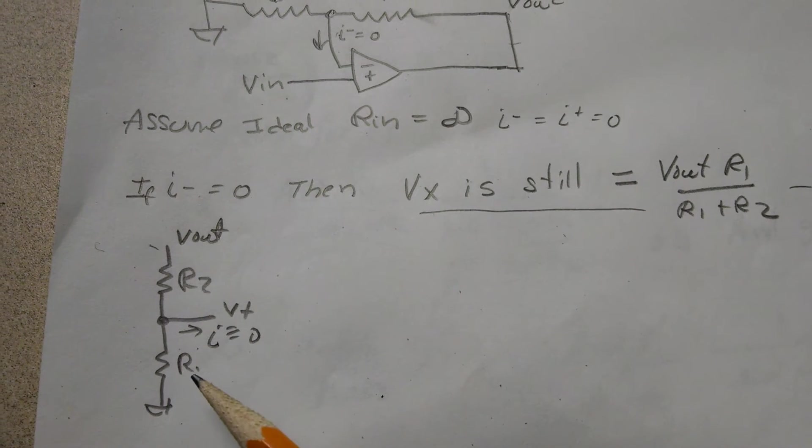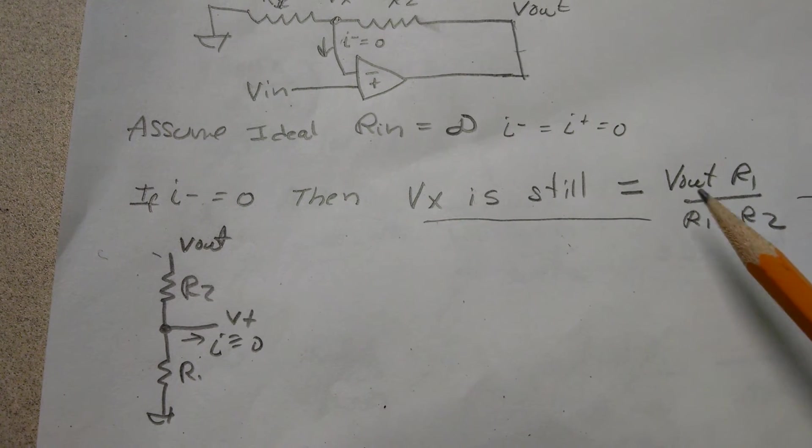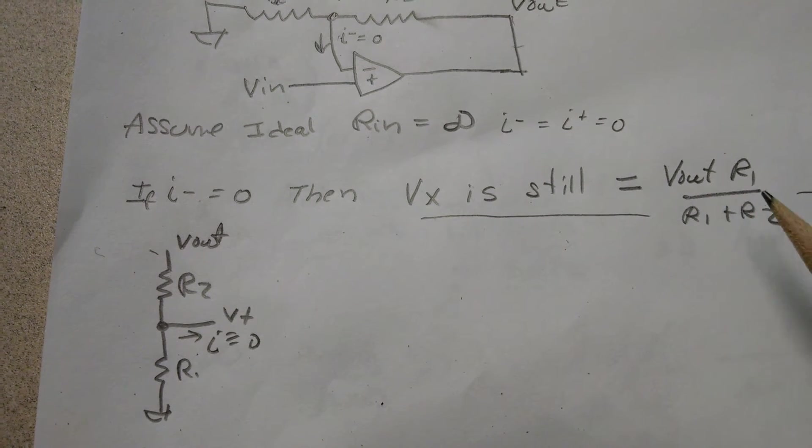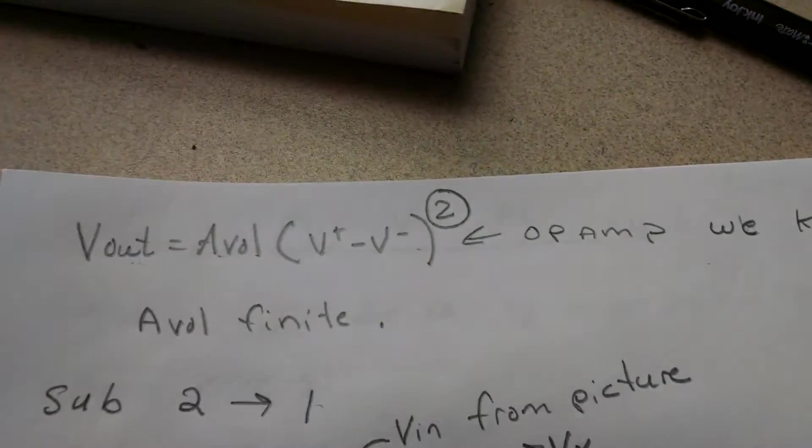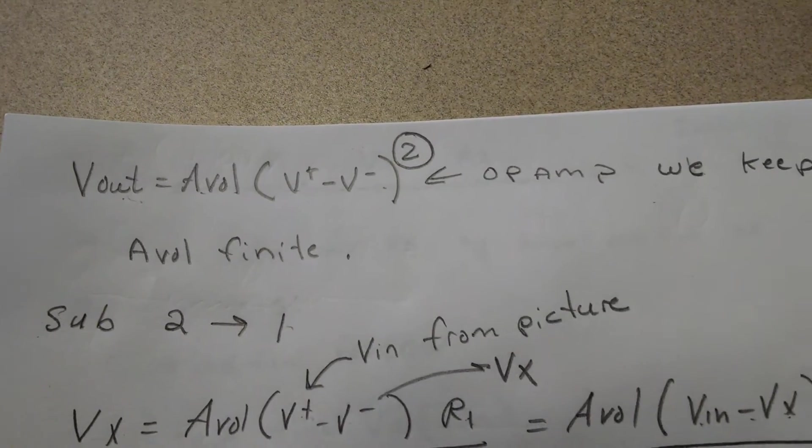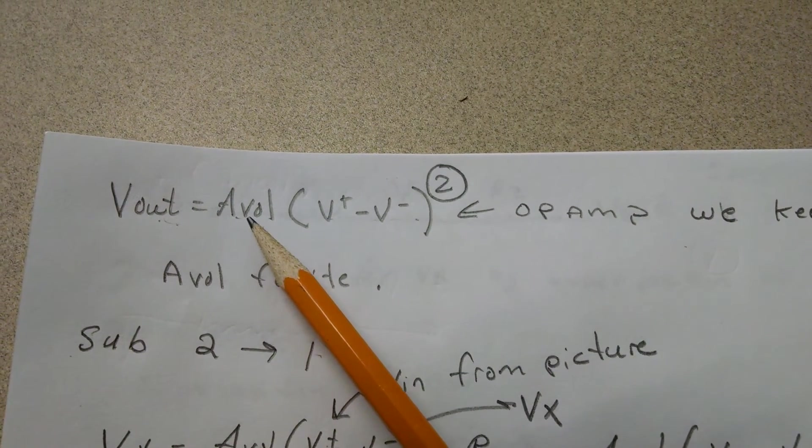Again, I've just rotated it if that's a little confusing. So Vx is just Vout times R1 over R1 plus R2. Well, then we use our op-amp. We're keeping the gain open-loop gain finite at this moment.